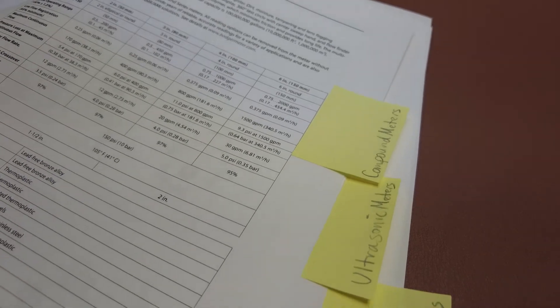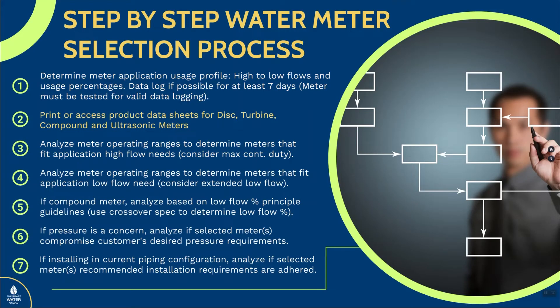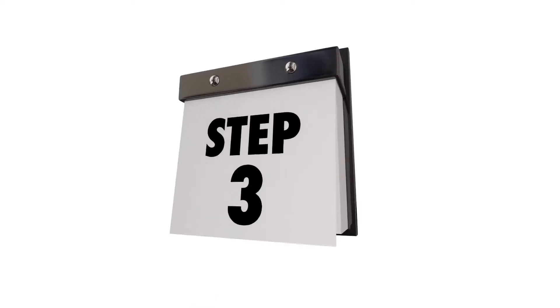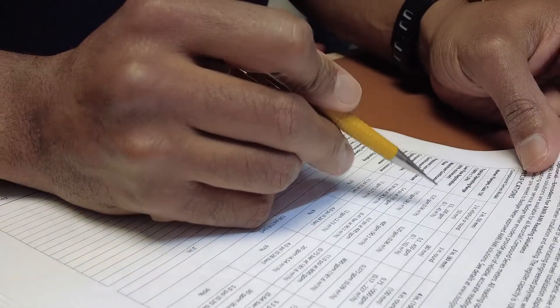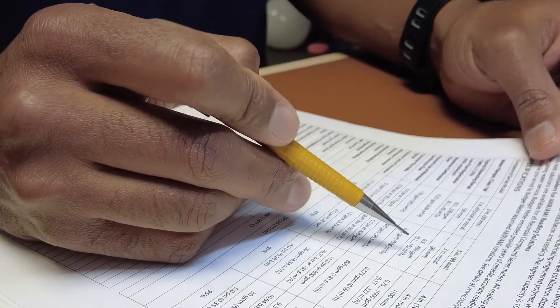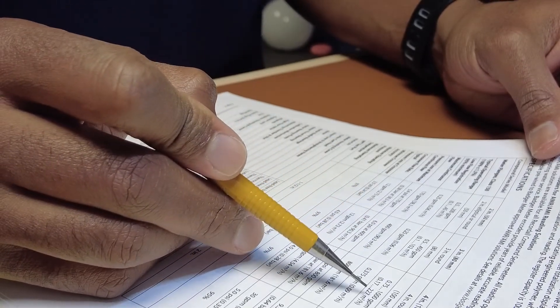I usually take those pages, put a tab on all the pages that have the chart, or just pull those out — either way — so I can easily refer to them. The third step is to analyze the operating range of your application. You've got your information showing how often particular flows are happening. Now take a look at the data sheets and find the meter that best fits the high flow needs of that application, always taking into consideration the maximum continuous duty of that meter as well.